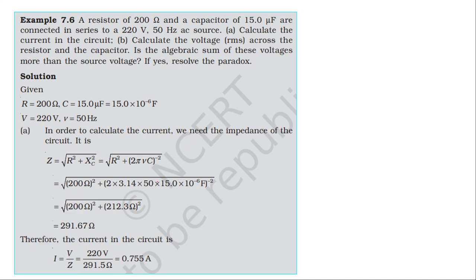We have a resistor and a capacitor of 15μF connected to an alternating source. In the alternating source, the potential difference is 220V and frequency is 50Hz. So the given values are: resistance 200 Ohm, capacitance 15μF, potential 220V, frequency 50Hz.